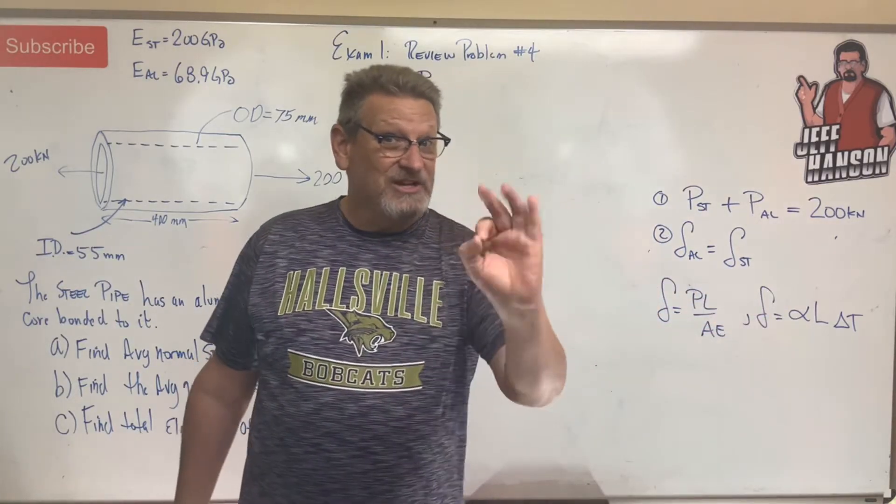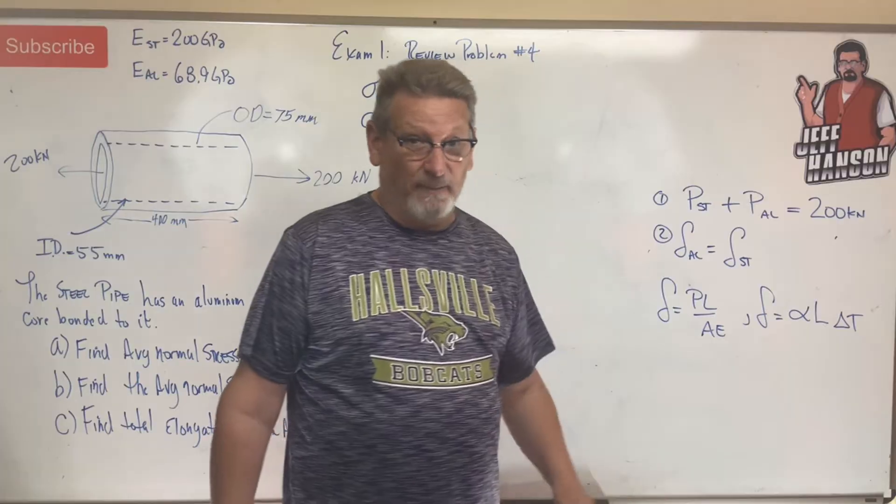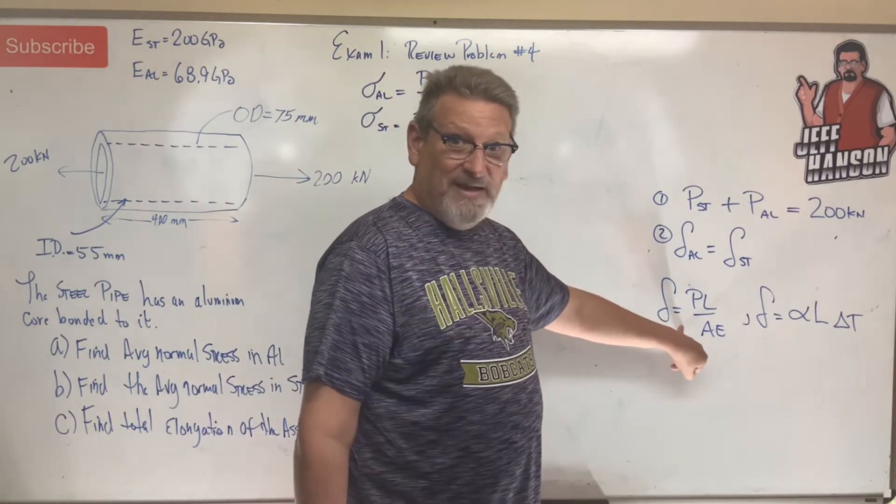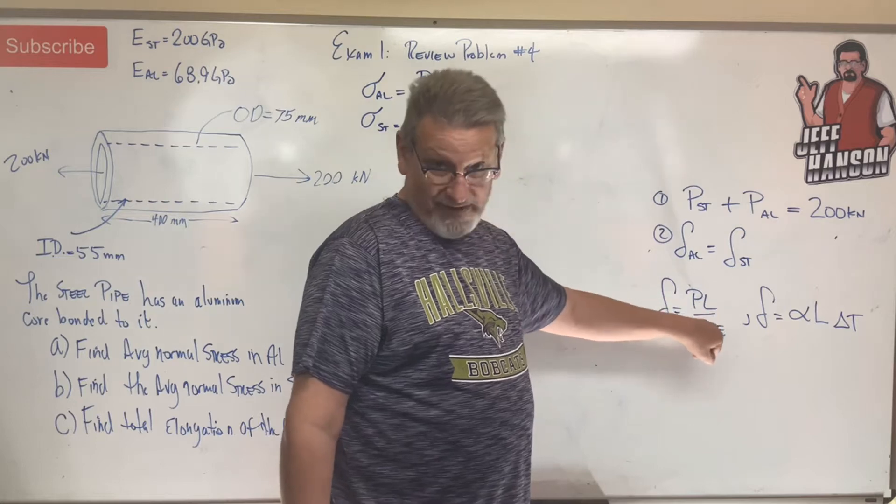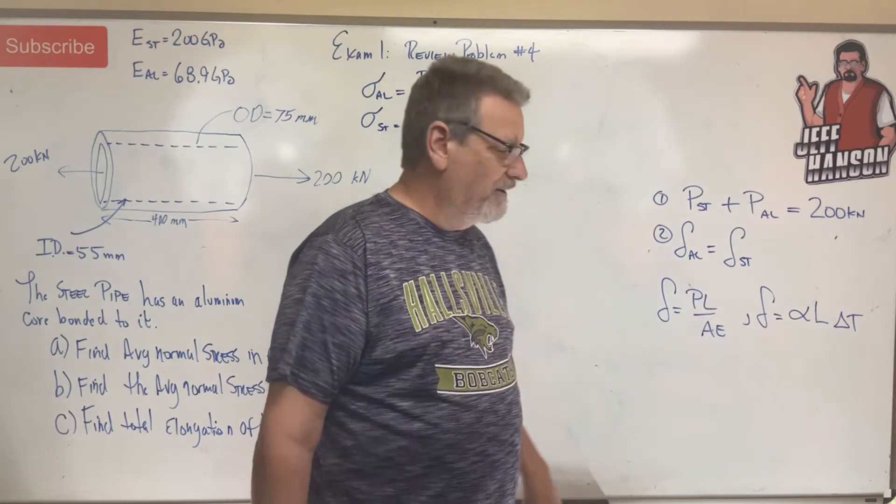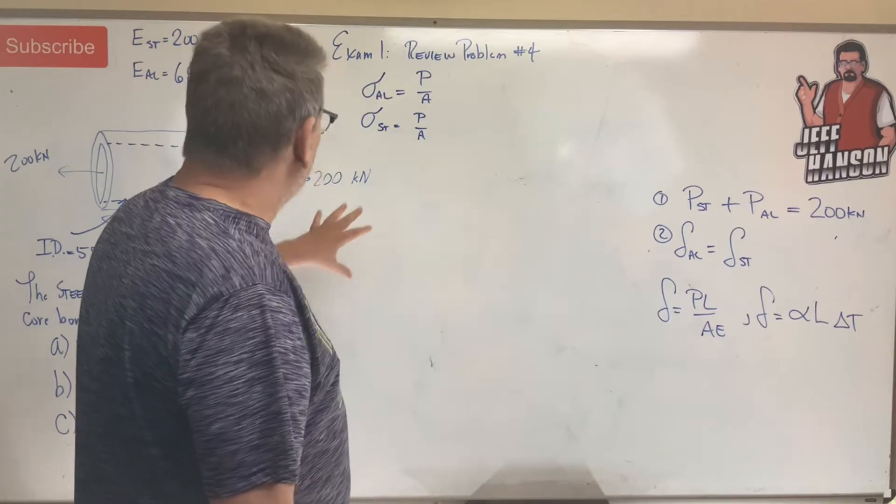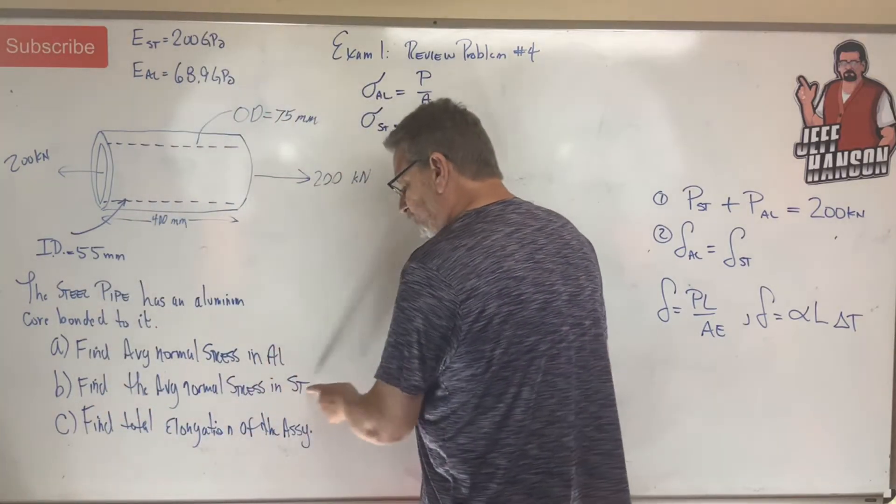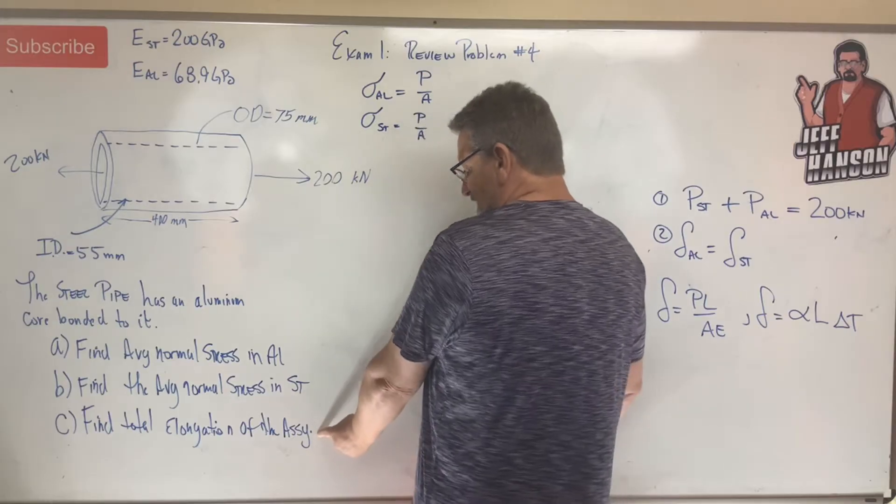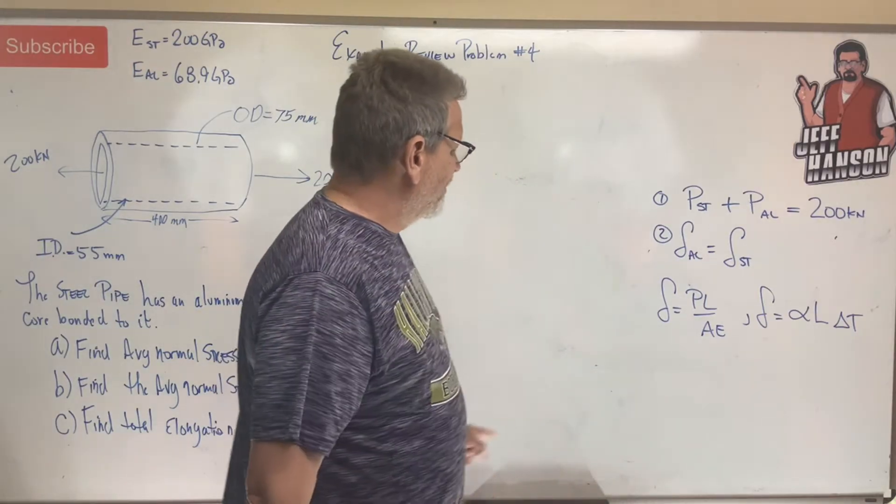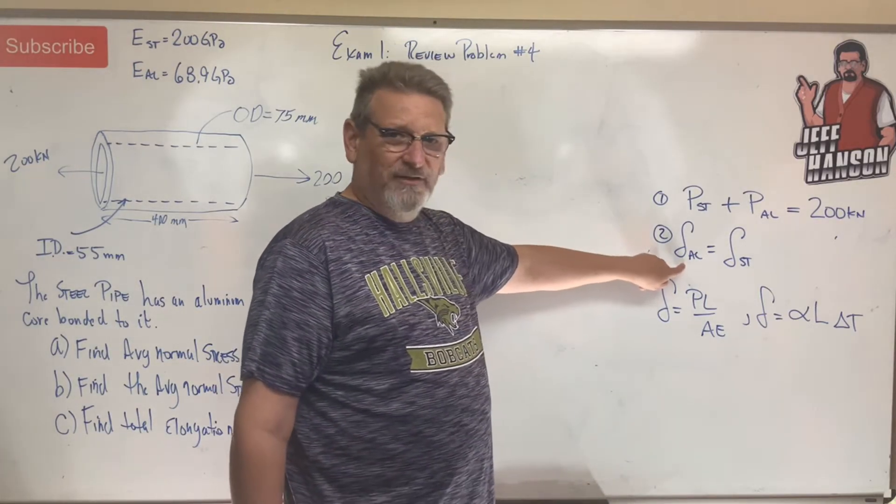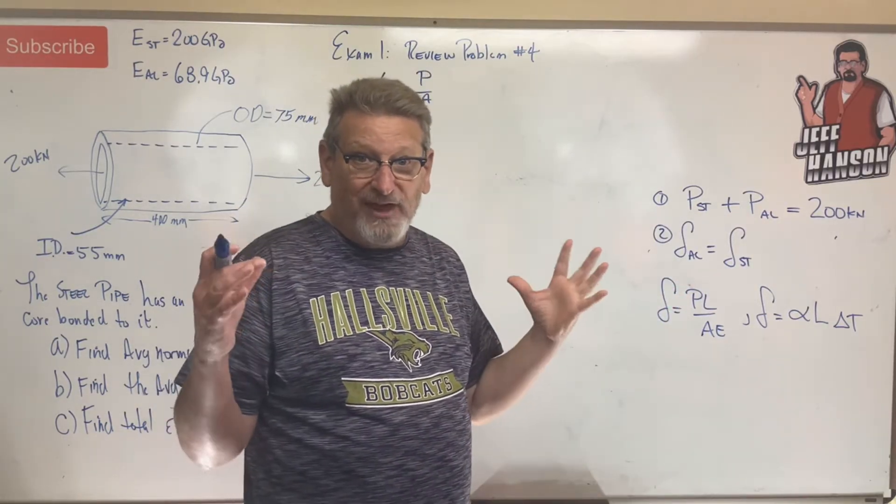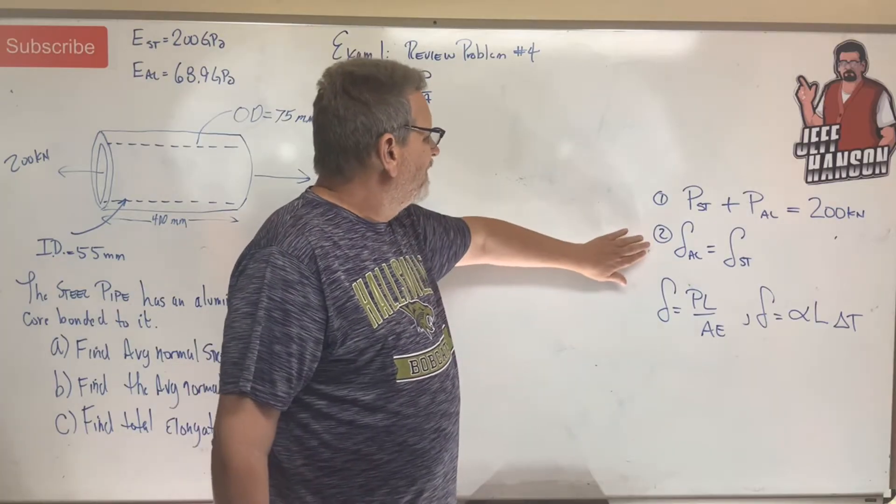As a matter of fact, stay tuned, watch the next video, there's an example problem on that topic. But on this one we're going to live in the PL over AE world, or the play equation as my students like to call it. Here we go. This is what we need for the first two, right? What's the normal stress in aluminum, what's the normal stress in steel, and then find the total elongation, that's delta. So we can find this or we can find that, doesn't matter which one because guess what, they're the same.